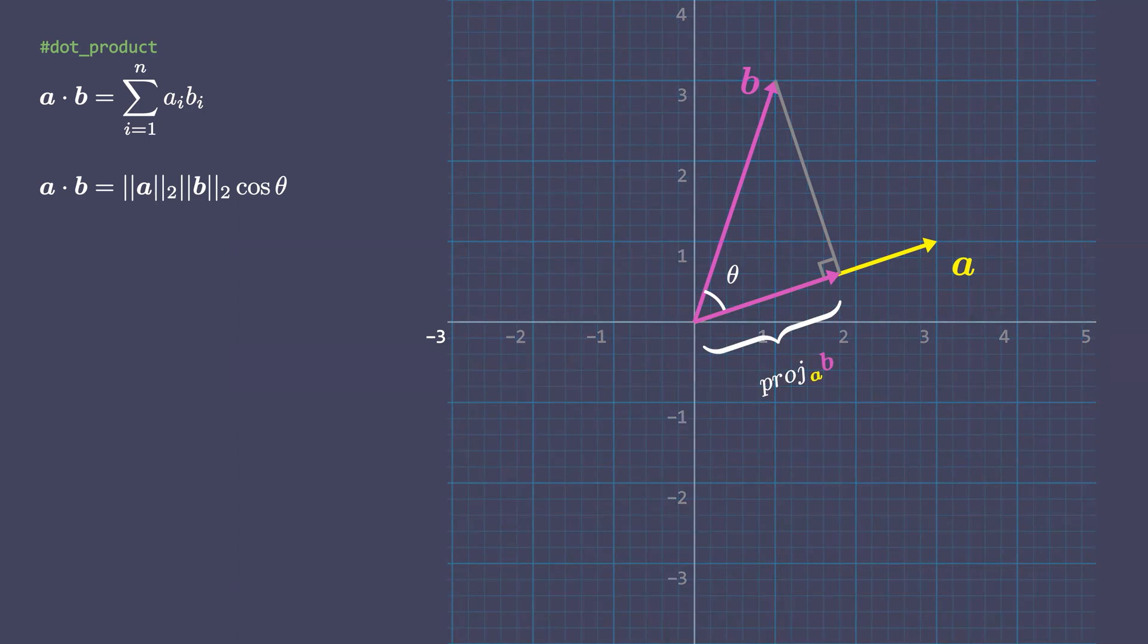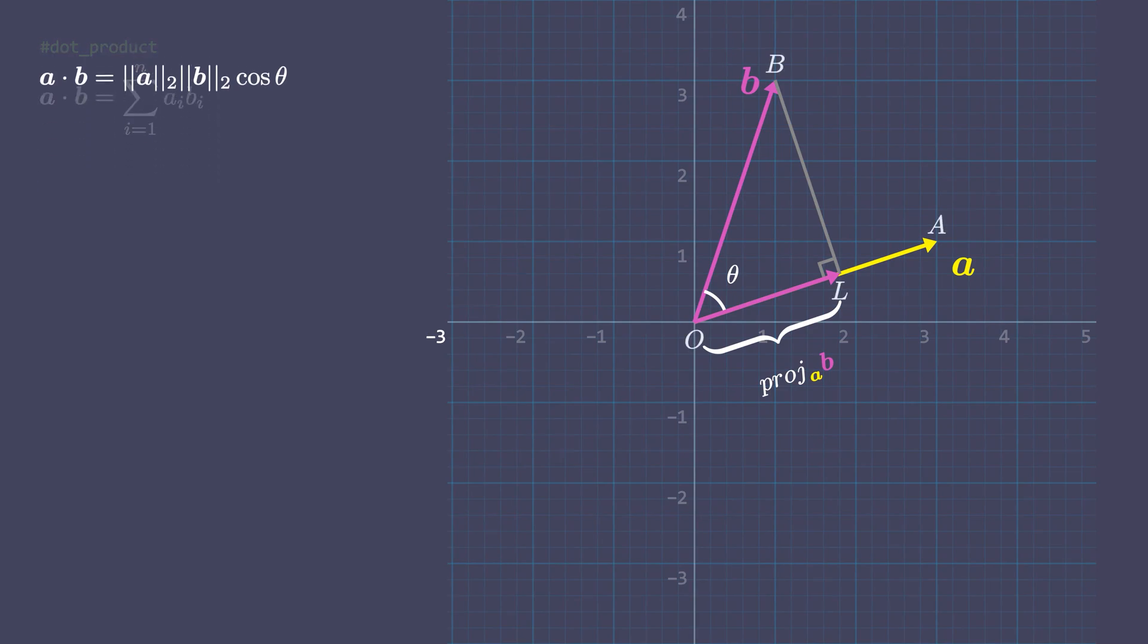Let's talk about a few geometric interpretations that we can make here. We have OA and OB, two vectors. Let theta be the angle between them. If you draw BL perpendicular to OA, that is to the tip of the projection of the vector B on A.